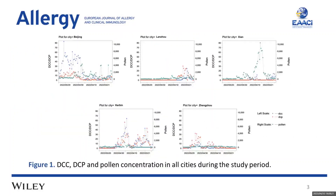Figure 1 shows the DCC, DCP, and pollen concentration in the studied cities during the study period.